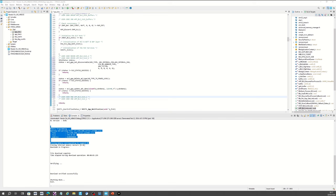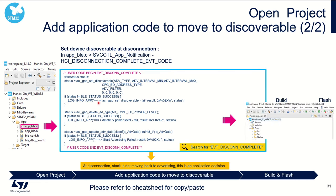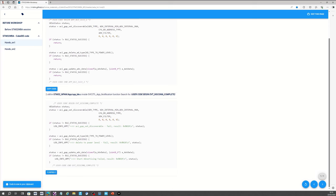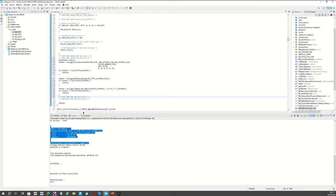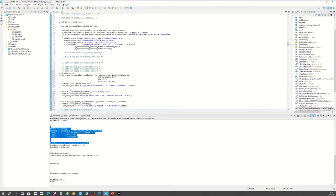Now, imagine your device is visible and you connect, then disconnect. If you are disconnected and want to move back into advertising, you also need to add code — basically the same code. The application needs to ask the stack to move back to advertising. This needs to be done under the section user code begin event disconnection complete, which is the event raised by the stack telling the application we have been disconnected. Copy the same code from the cheat sheet and paste it under that section.